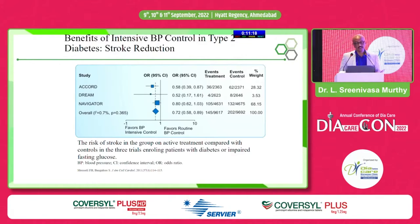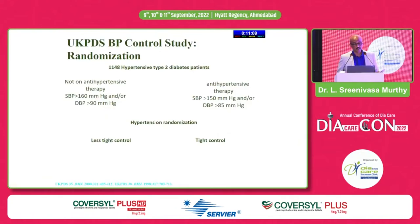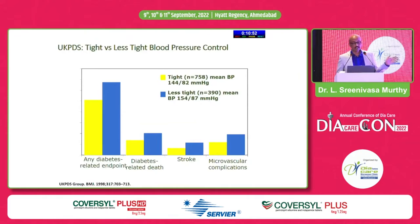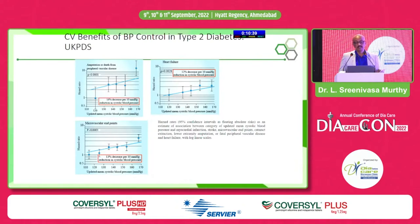The best evidence for intensive BP control comes from trials like ACAD, DREAM, and HOT. The HOT trial showed CV events were reduced in diabetic patients at a diastolic BP of less than 80, but not in non-diabetic patients. The UKPDS BP control study randomized 1,148 patients into tight versus less tight control arms, and tightly controlled BP clearly reduces CV events in newly diagnosed type 2 diabetics. CV benefits include reduction in heart failure, amputation, and microvascular endpoints.